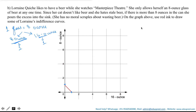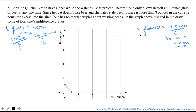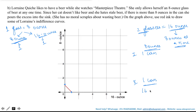What if Lorraine consumes one glass in the first half of the theatre and another glass in the second half? In total she is consuming two glasses, which amounts to 16 ounces — but note that she is only consuming 8 ounces at a time. If her refrigerator has only 8-ounce cans, she pours one can in the first half and one can in the second half, making a total of 16 ounces consumed during the entire show.